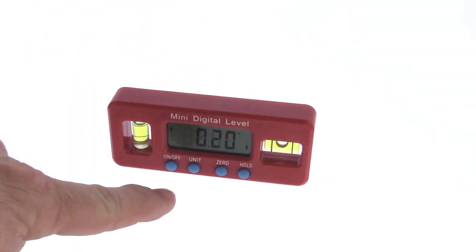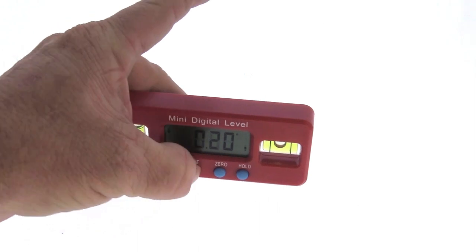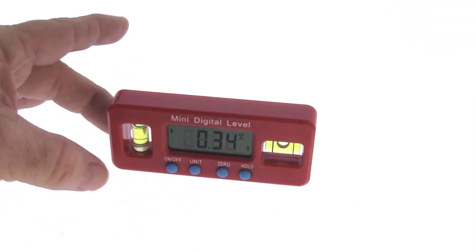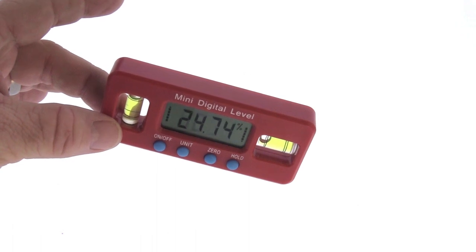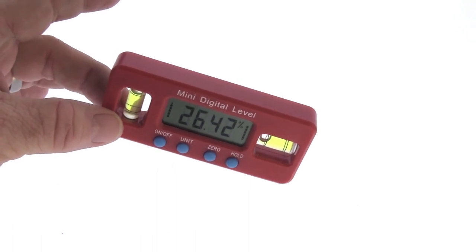You have a unit button. You hit the unit button once and that changes to slope. So it gives you a slope percentage.